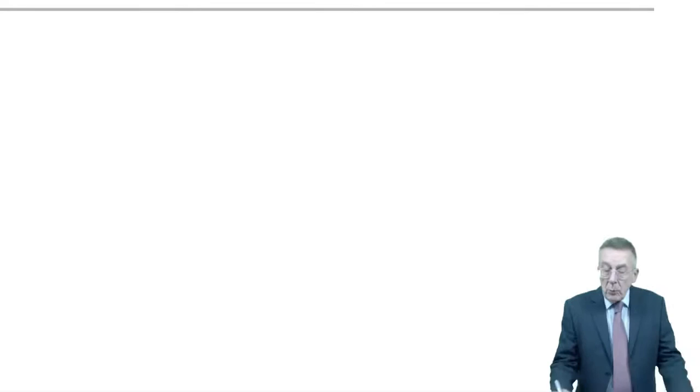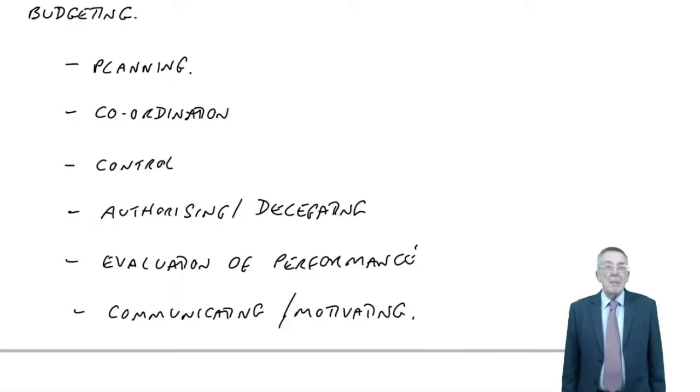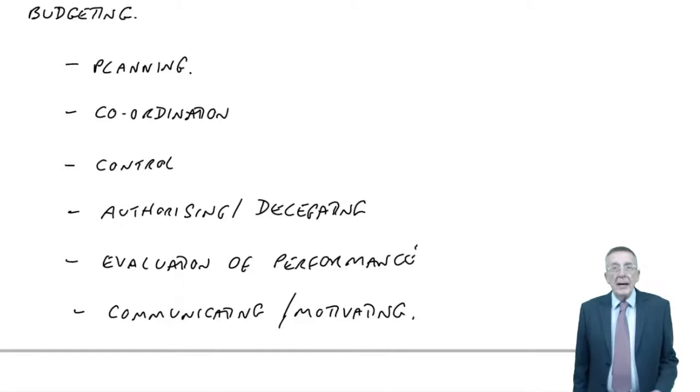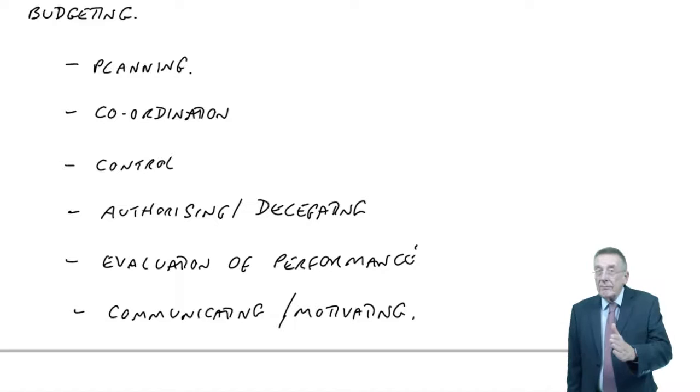A bit of terminology, principal budget factor. Well, the thing is, where are we going to start? It's all right saying, let's do a budget for next year. I'm a desk producer. But how am I going to start? I want lots of budgets. I want to budget for how much wood we need. I want to budget how many staff we need, and so on. But we can't just rush in from nowhere. We have to decide where we're going to start.